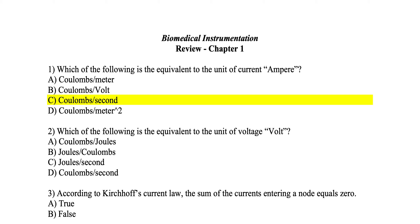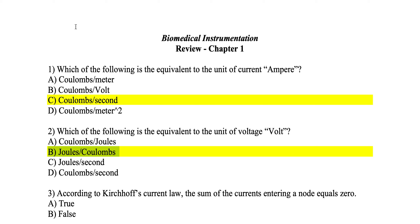For question 2, which of the following is the equivalent of the unit of volt, which is the unit for measuring electrical potential? The unit volt is the energy consumption per charge passing through a wire or a connector. The answer for this is B, which is joules per coulombs.